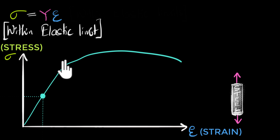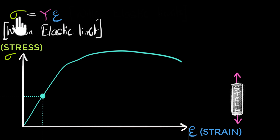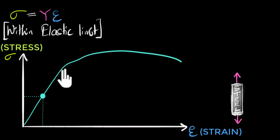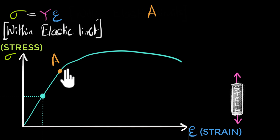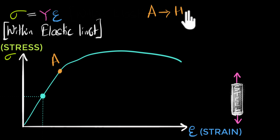The first thing you can note is that there is a straight line — a linear region. This is the region where Hooke's law is working, because when Hooke's law works, sigma (stress) is proportional to strain, and proportionality means a straight line. But the straight line ends after some point. We mark that as point A, and beyond point A it's no longer a straight line, which means Hooke's law no longer works. So point A marks the Hooke's law limit.